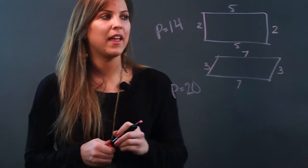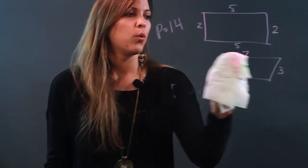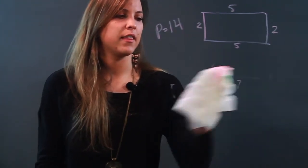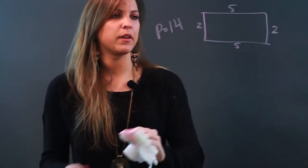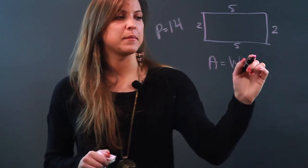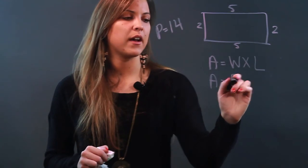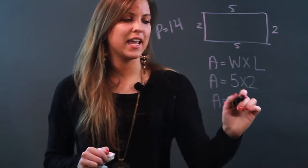And then to find the area, when we're doing the area of a rectangle, we want to just multiply the height times the width. So my formula here is area equals width times length. So I'm just going to substitute these values. Area equals 5 times 2. So my area here is 10.